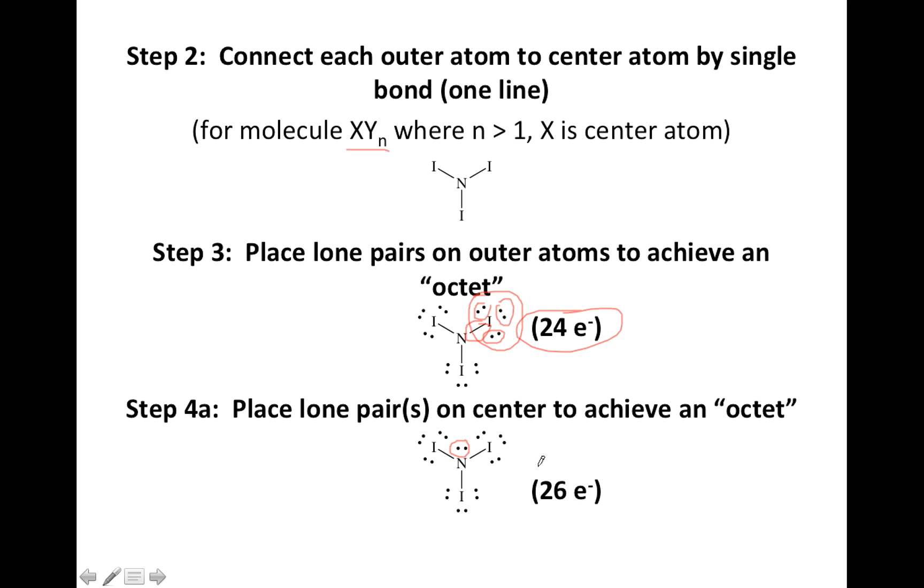Putting that extra pair on the nitrogen gives it eight, or an octet, and now every atom in my drawing has eight. And I have achieved my goal of an octet on every atom and a total number of valence electrons equal to twenty-six.